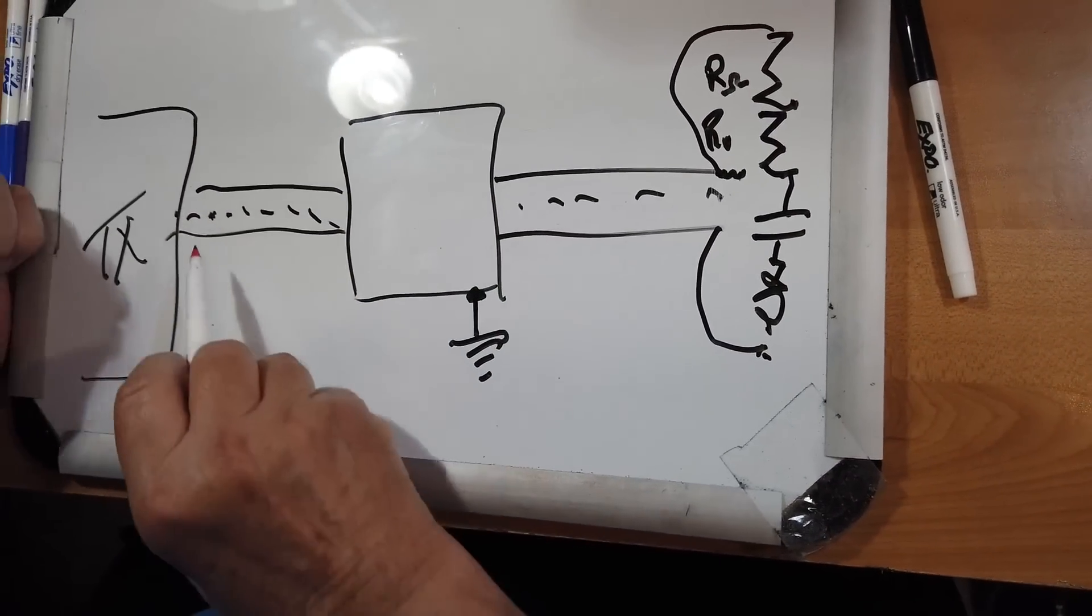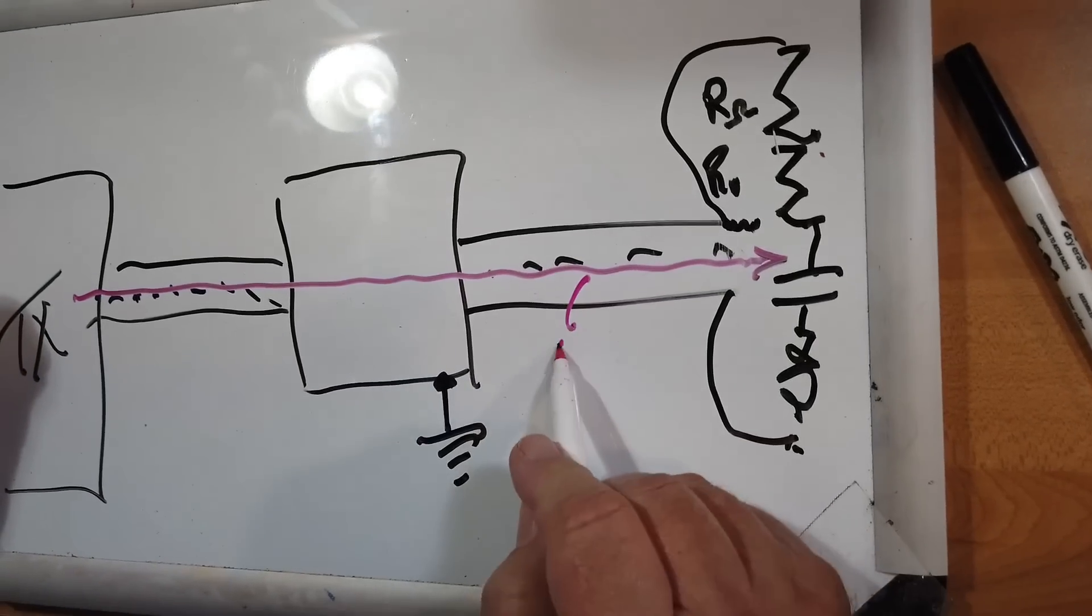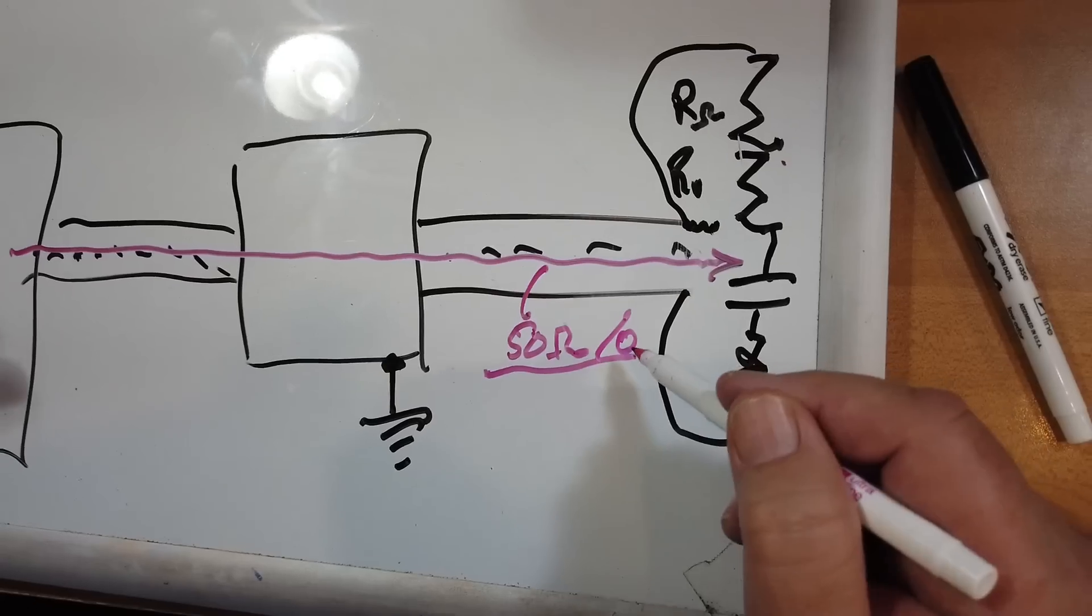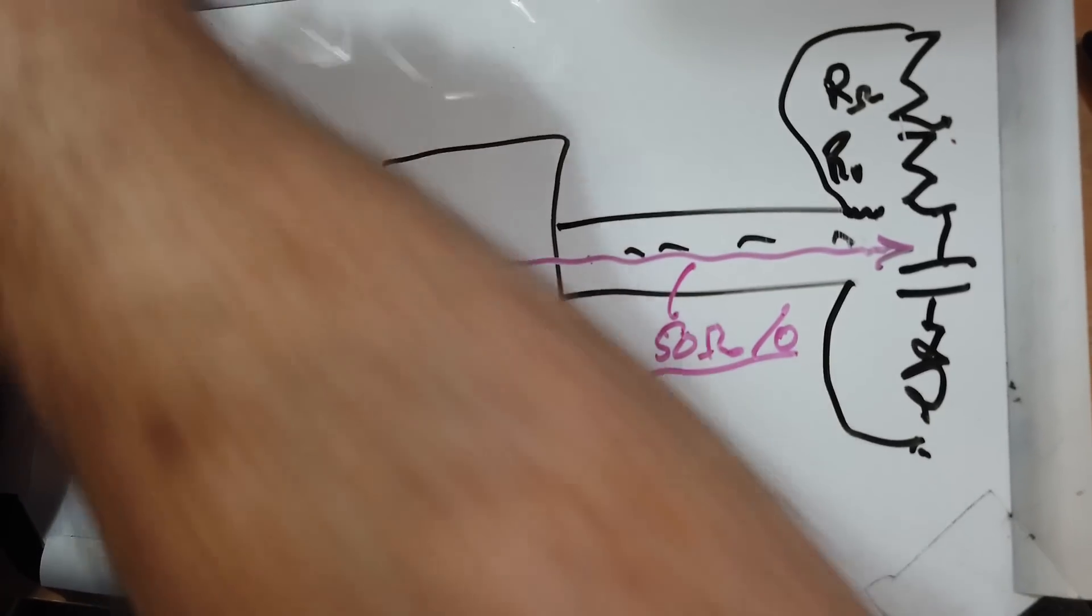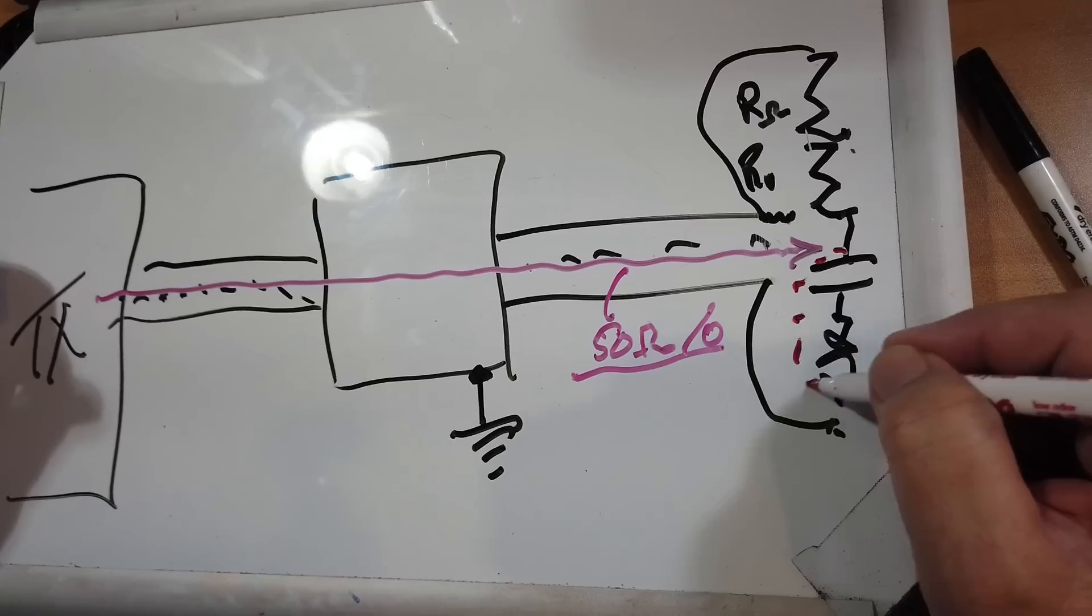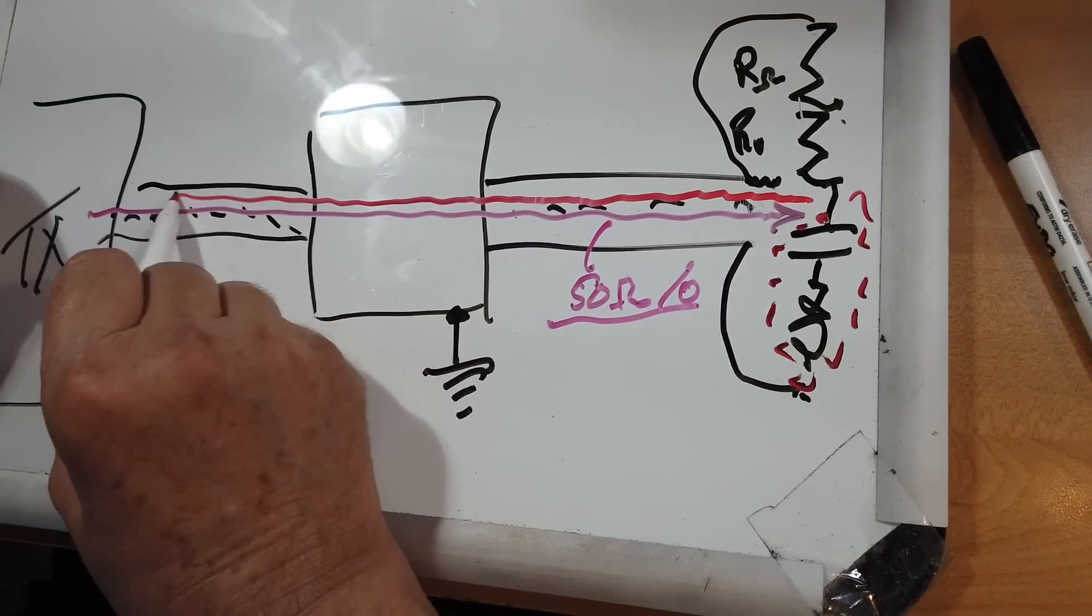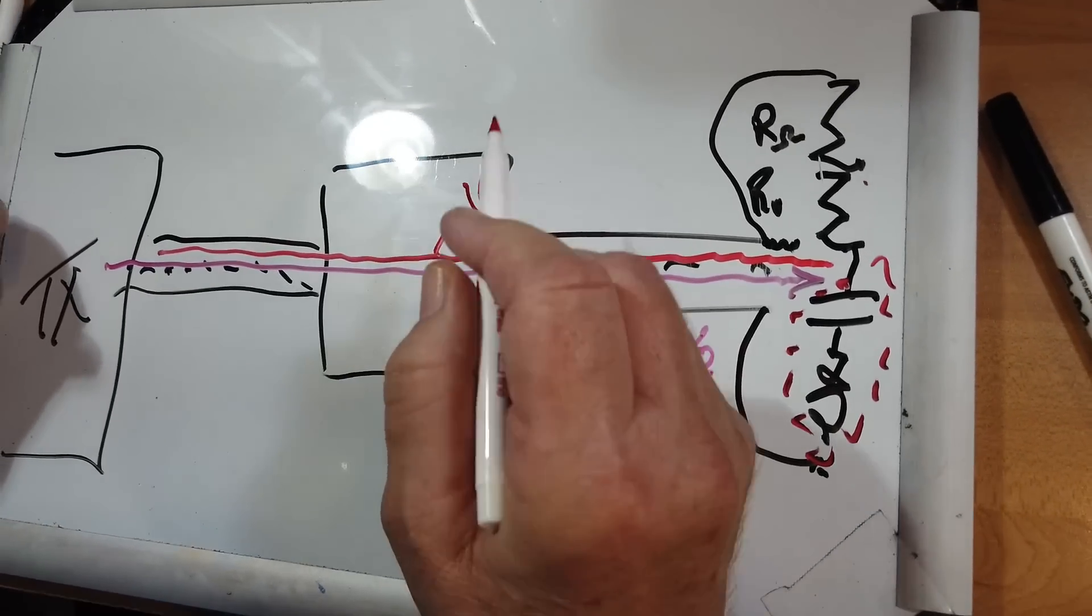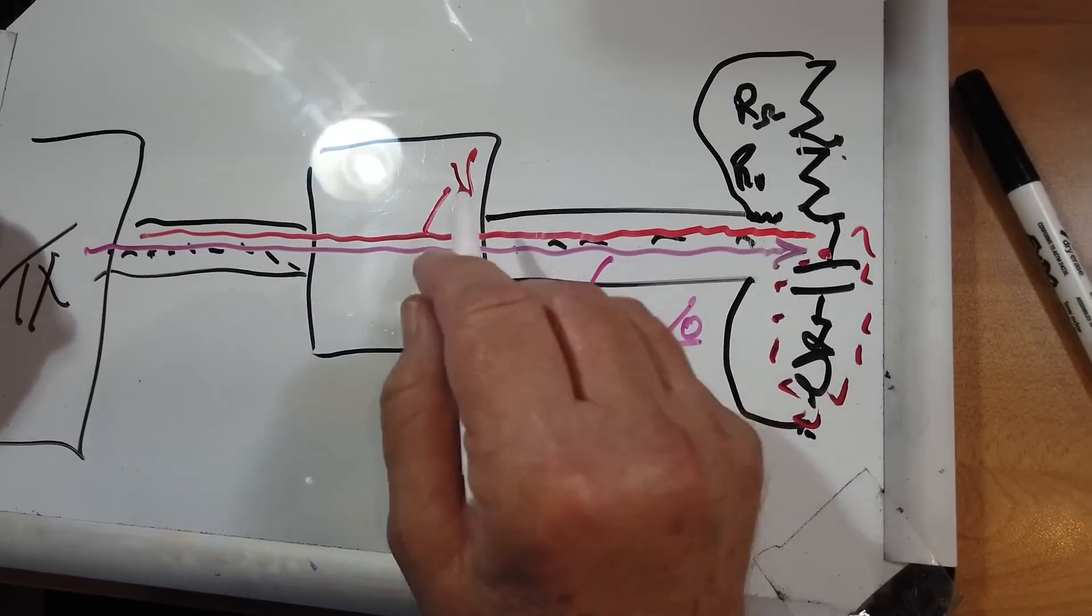So the forward power comes here, goes through and hits this. It's 50 ohms and it is purely resistive, so it has a phase angle of zero. Now the reflected power comes back the other way. Because this is a mismatch, we store energy in the reactive components, and that energy is transmitted back. You can see it as a voltage or as power, referenced to 50 ohms.